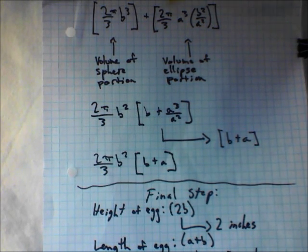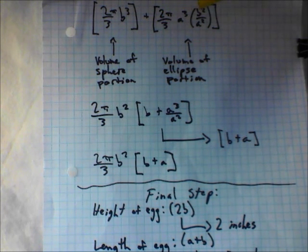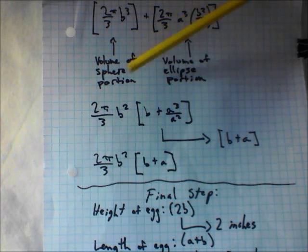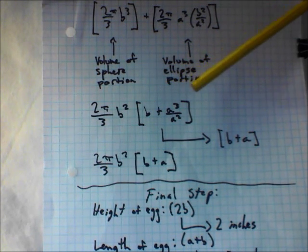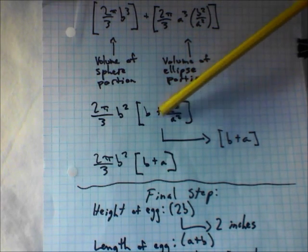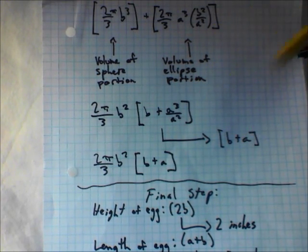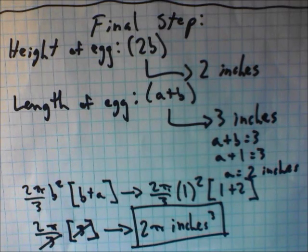Now we add the two portions together: 2π/3 × b³ for the sphere portion, plus 2π/3 × a³ × (b²/a²) for the ellipse portion. Factoring out 2π/3 × b², we're left with b + a³/a² inside, and since a³/a² reduces to a, we get the final formula: 2π/3 × b² × (b + a).